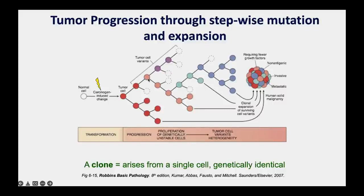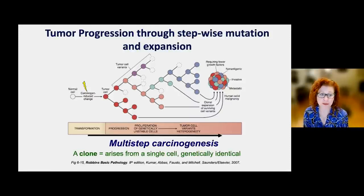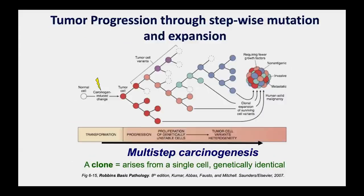As this cell is dividing, it can acquire additional mutations that give it an additional advantage. Some of those cells might acquire another mutation that knocks out a different safeguard, and so on, until enough safeguards are knocked out to form a full-blown cancer. This illustrates that cancer development is a multi-step process in which multiple mutations accumulate.